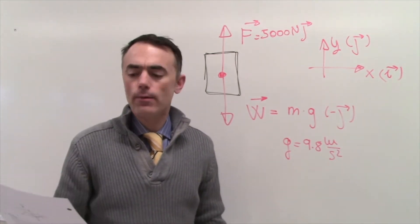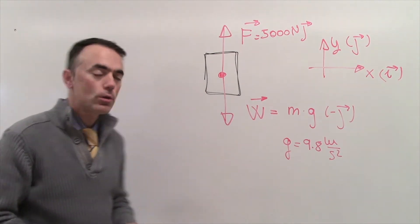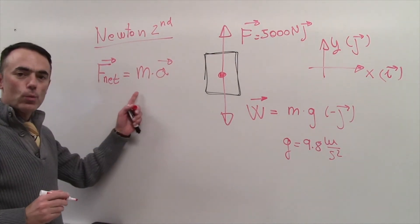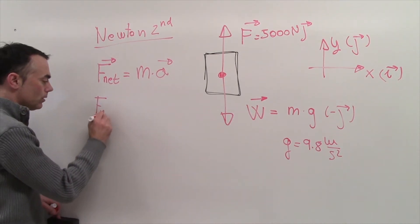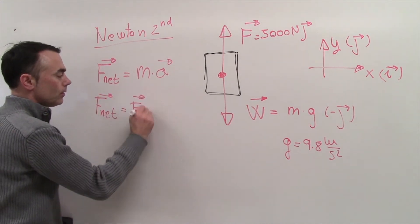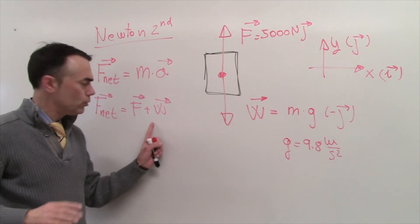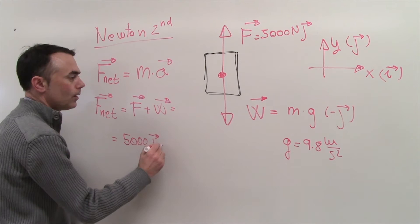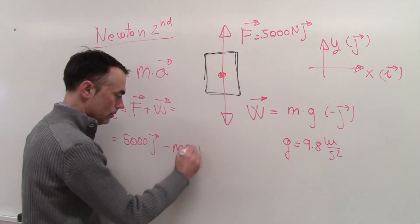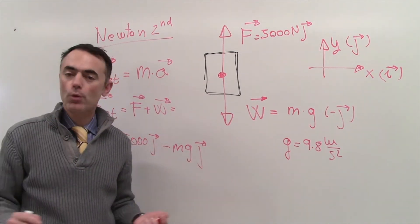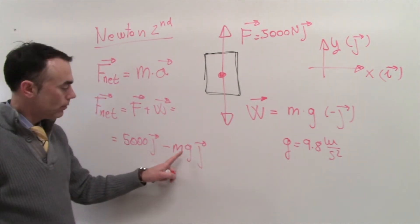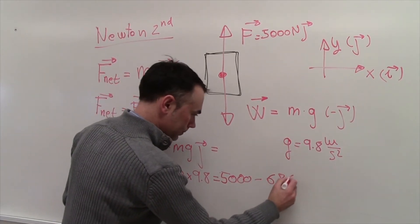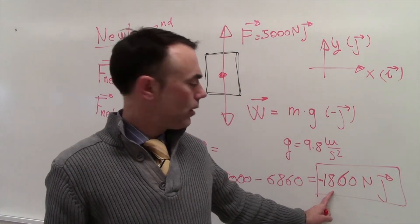Now let's calculate the acceleration on the elevator. Using Newton's second law, the net force equals mass times acceleration. The net force is F plus W: that's positive 5,000 minus mg, with unit vectors. This is 5,000 minus 700 times 9.8, giving a net force of negative 1,860 newtons — pointing downwards.